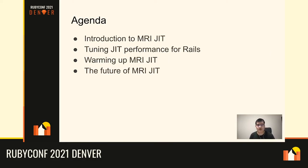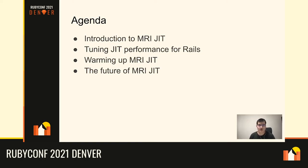Today I'm going to talk about these four things. First, I'm going to talk about what MRG we have today, and after that talking about how to tune the JIT performance for Rails applications — because Rails is, for me, the main production workload of Ruby usage. Then I'll also talk about warming up: how we can warm up the MRG performance to peak performance. And lastly, I'll briefly discuss the future of MRG.